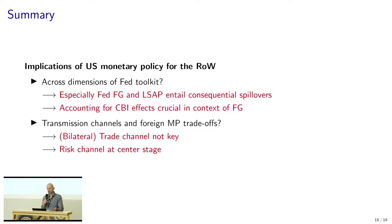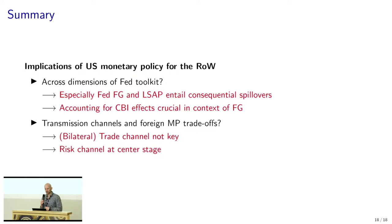Let me wrap up. With this paper we look at the implications of US monetary policy for the rest of the world across the dimensions of the Fed toolkit. Especially forward guidance and LSAPs are consequential, both in terms of the magnitude of spillovers and in terms of central bank challenges. We argue that accounting for central bank information effects — or more generally residual components in policies or prices — is important. We provide at least tentative evidence that the trade channel doesn't seem to be key; it seems to all rest on the financial channel, where risk perceptions, risk aversion, and risk appetite are key — consistent with the narrative of the global financial cycle. I'll stop here and hand over to Giovanni. Thank you.